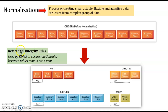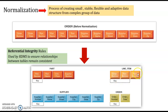We use referential integrity, which is a set of rules used by a relational database management system to ensure the relationships between tables remain consistent. We have the part, supplier, and order entities. There is also a bridge entity, which connects part with supplier and part with order. Each has a foreign key referencing the others, but they all have their own primary key.